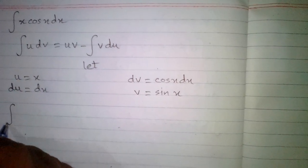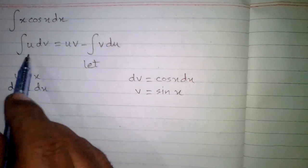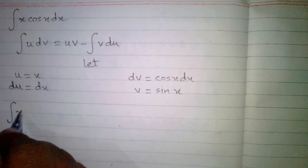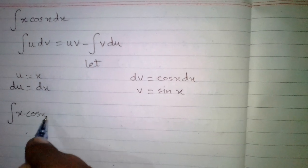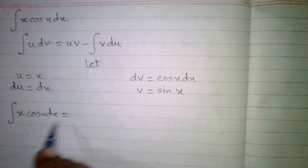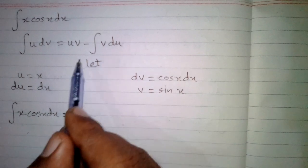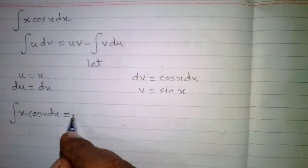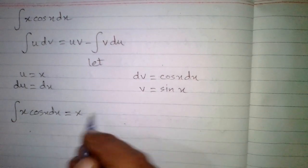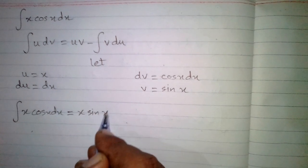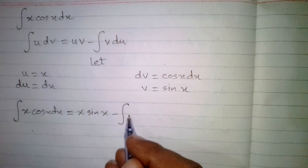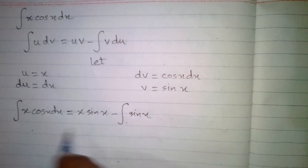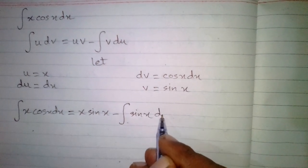We will get integral of u dv. So u is x and dv is cos x dx, which is equal to u v minus integral of v du. So u is x and v is sin x. Then minus integral, v is sin x, and du is dx.